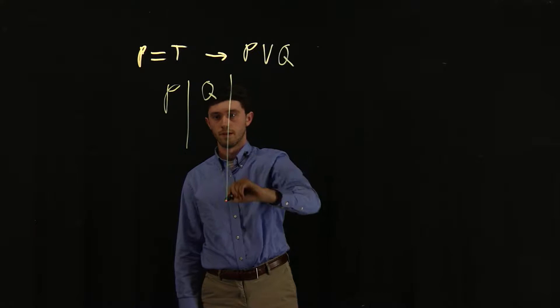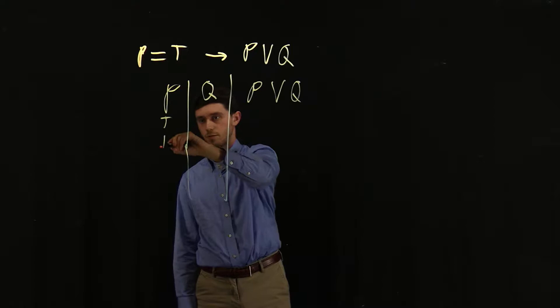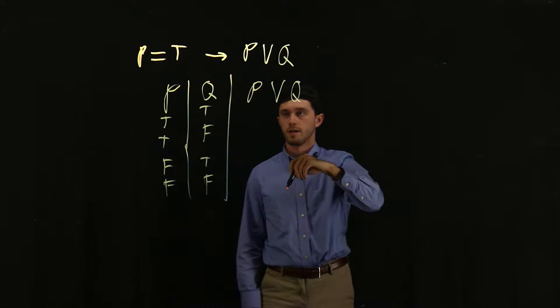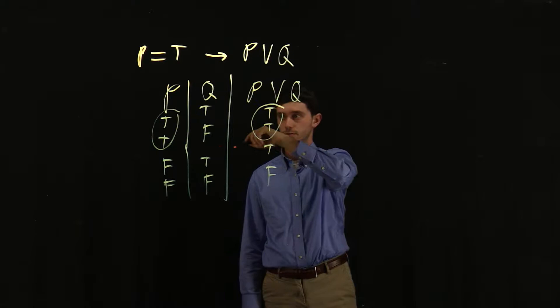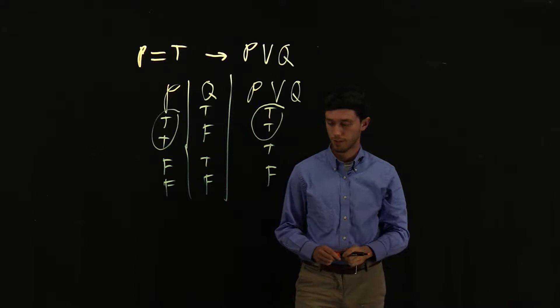And this can just be written up as a truth table. So we have P, Q, and then we'll have P or Q. So this will be true and false, and then for the P or Q, it would be true. And we see here that every time P is true, P or Q is also true. So that allows us to say that P entails P or Q.